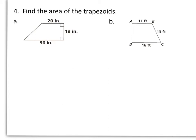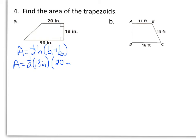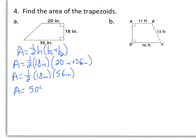In number 4, we want to find the area of the trapezoids. In letter A, we have a trapezoid with bases of 20 and 36 inches and a height of 18 inches. Area equals one-half times the height times the sum of the two bases, so area equals one-half times 18 inches times (20 inches plus 36 inches). That gives one-half times 18 times 56, and multiplying straight across, area equals 504 inches squared.